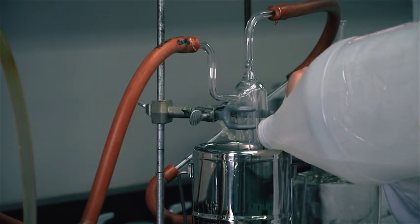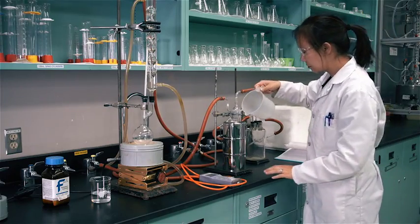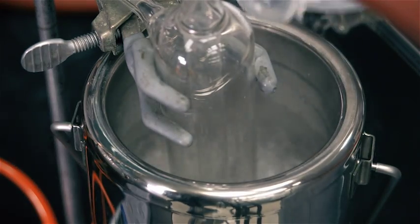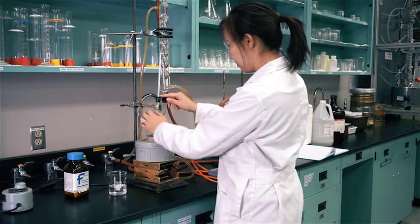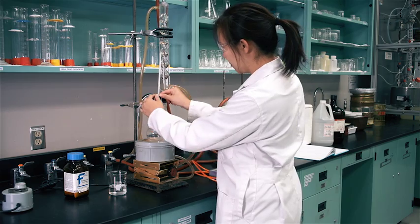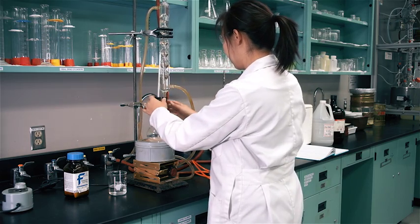Put acetone and dry ice into the Dewar flask. Make sure the thermometer is in the correct position to measure the temperature accurately.